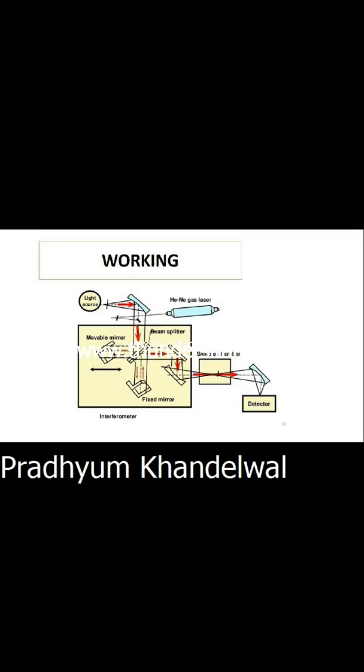However, FTIR was not possible without the invention of minicomputers, because it uses Fourier transformation to convert the results into a graph. In 1965 the first minicomputer was invented, named the PDP-8, and because of that we were successful in making a FTIR that could be used commercially.